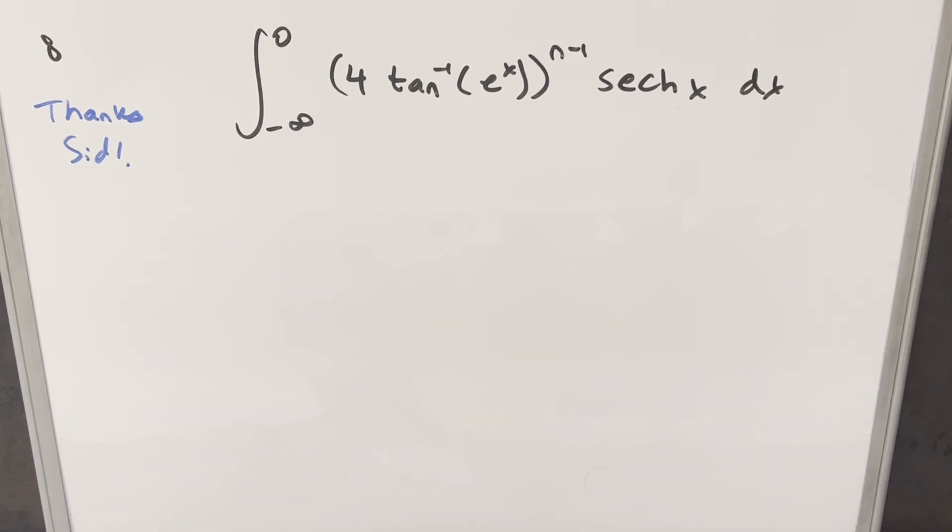I brought you another interesting integral sent to me by SID. We have the integral from minus infinity to zero of four arctan e to the x to the n minus one times hyperbolic secant of x dx.